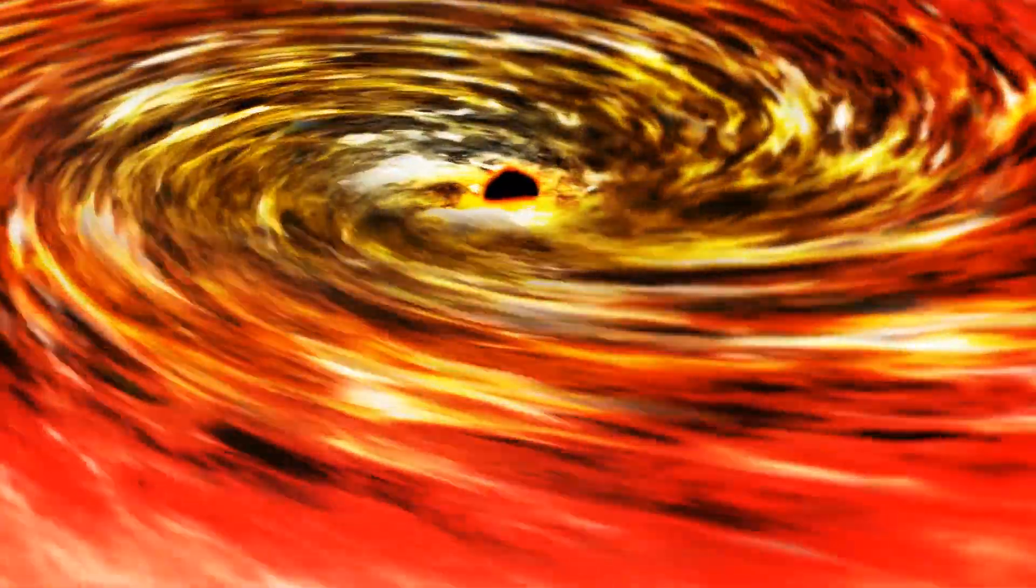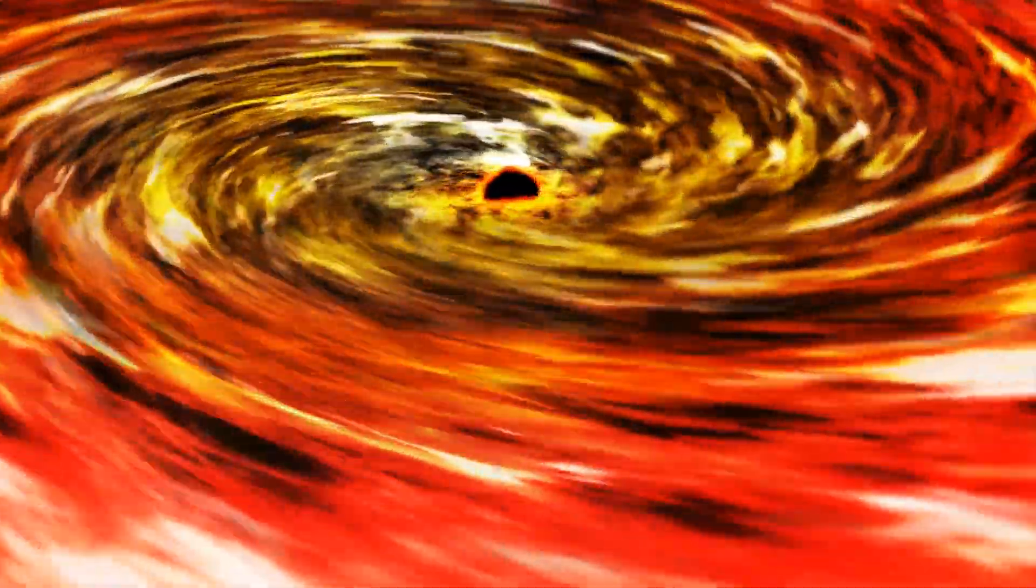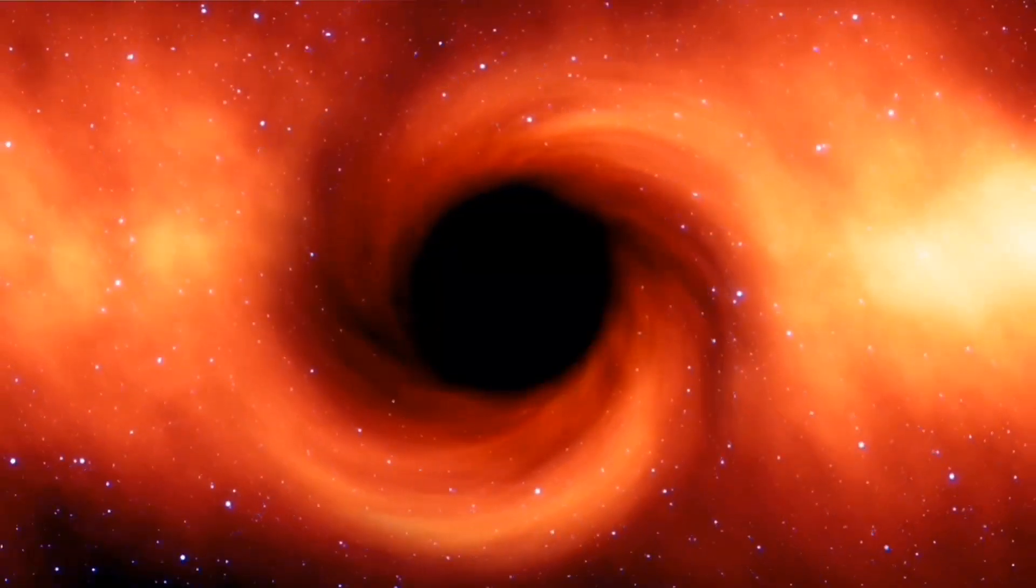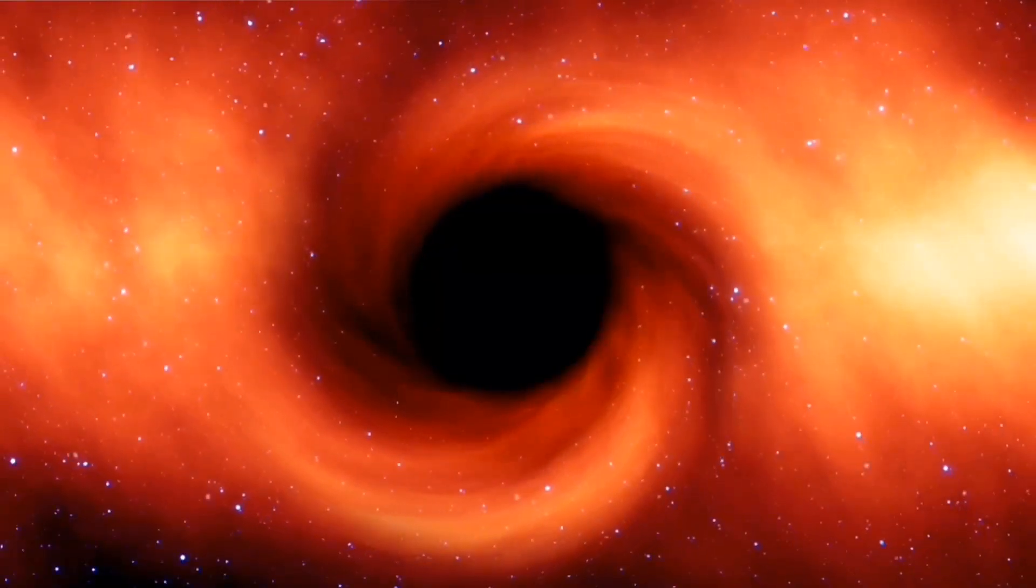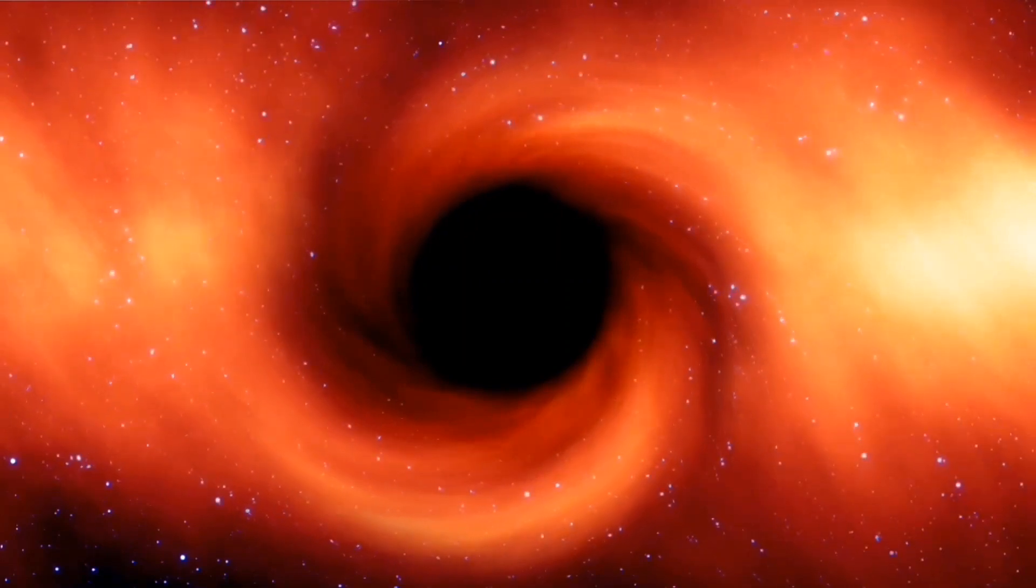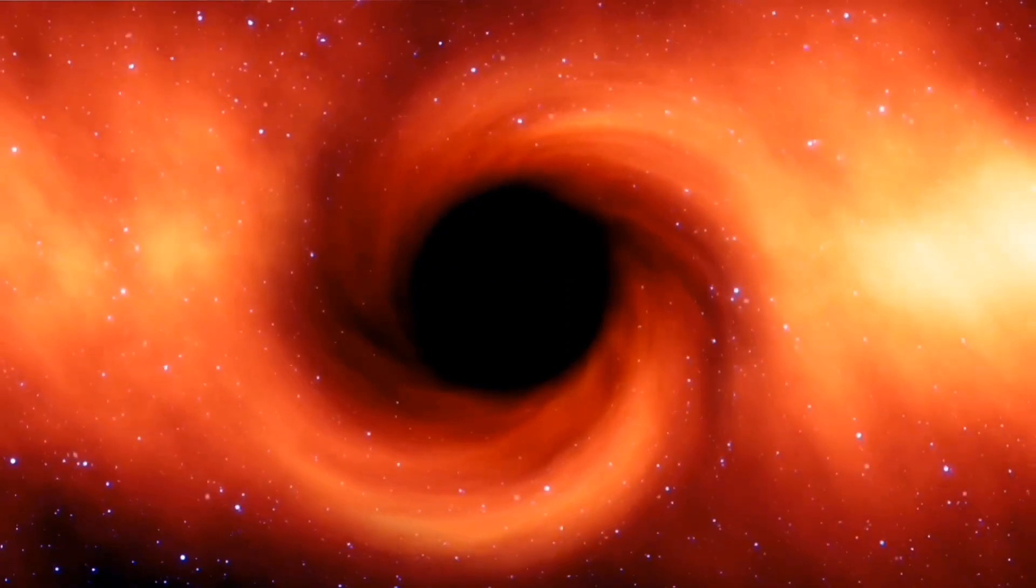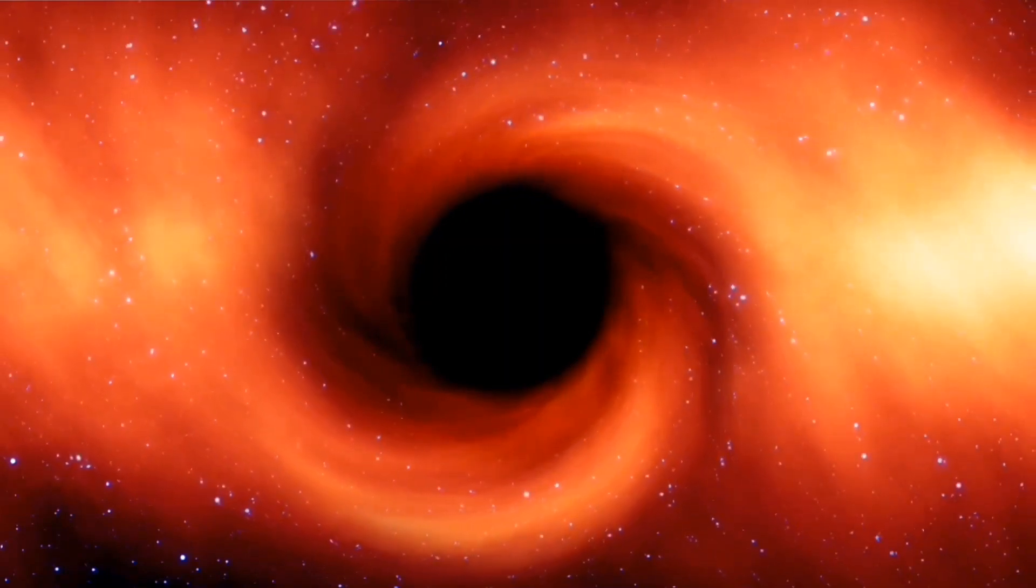They're so close, in fact, that the black hole appears to be stealing gas from the surface of the white dwarf. This material forms a wide, thin disk around the black hole. As material in the disk spirals toward the black hole, it gets extremely hot, so it emits X-rays.